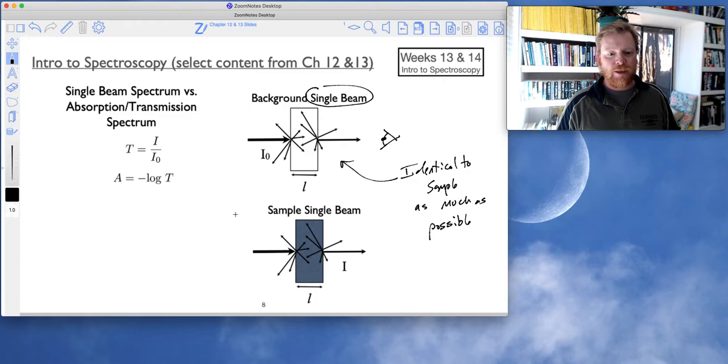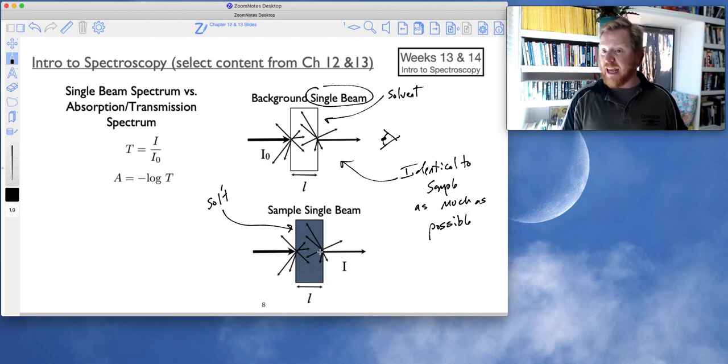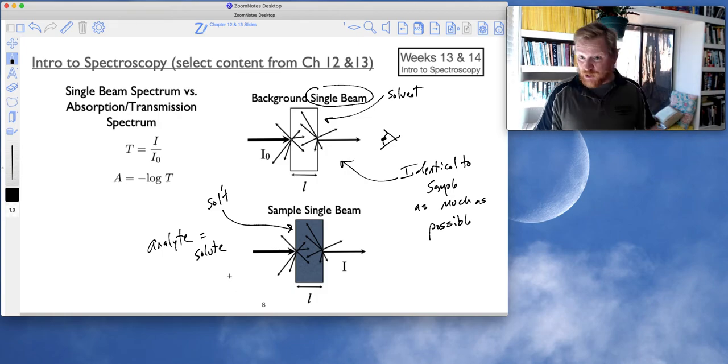So we want to try to make this as identical to the sample as possible. And so if this were a solution, so let's suppose if the sample were some type of solution, then my background would be the solvent of that solution. And then the only difference between my background and sample would be I will replace my pure solvent with a solution of analyte solutes in that same solvent that I did for the background. So we'll say analyte equals the solute.